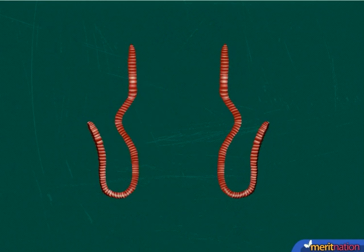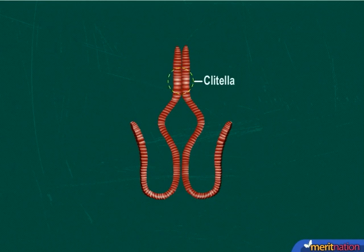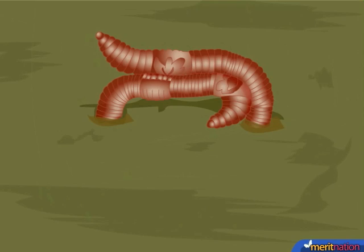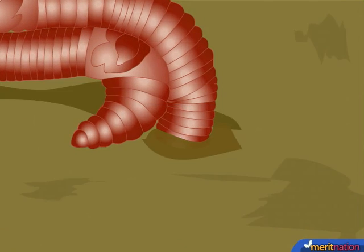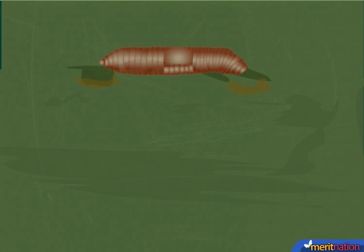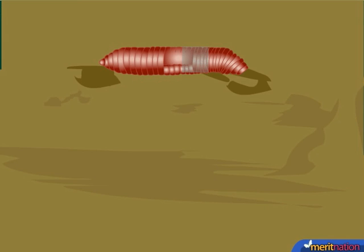Now let us see how reproduction takes place. Two worms mate by attaching at their clitella. After this, a mutual exchange of sperms occurs between the two worms. The sperms are temporarily stored in sperm receptacles, while the clitellum secretes a mucus cocoon. The cocoon slides along the worm, picking up the eggs produced in the ovaries and then the stored sperm from special reproductive pores.